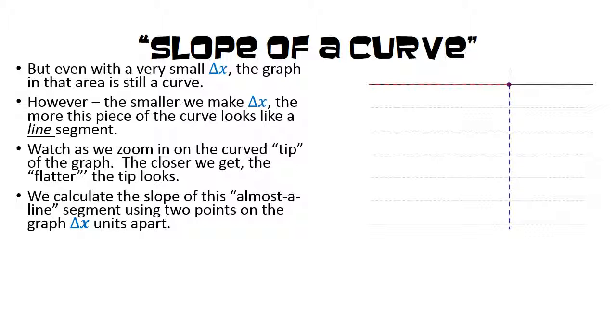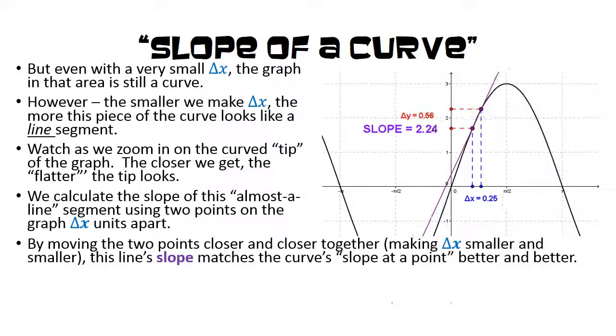We calculate the slope of this almost a line segment using two points on the graph that are delta x units apart. By moving the two points closer and closer together, thereby making delta x smaller and smaller, this line's slope matches the curve's slope at a point better and better.